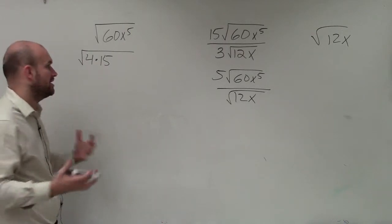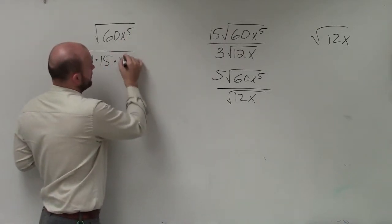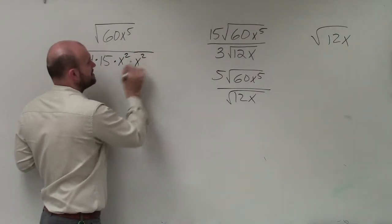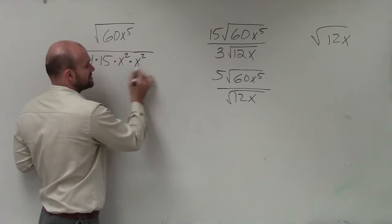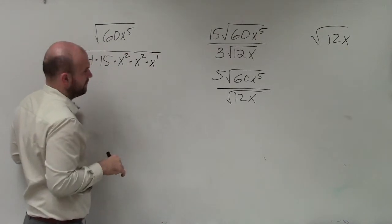Now, to rewrite x to the fifth as square numbers, that's going to be x squared is a square term, x squared is another square term. And how many times do I need to multiply x's by themselves to get to x to the fifth? Well, this is x to the fourth, so therefore, I need to multiply by x to the first to now get x to the fifth.